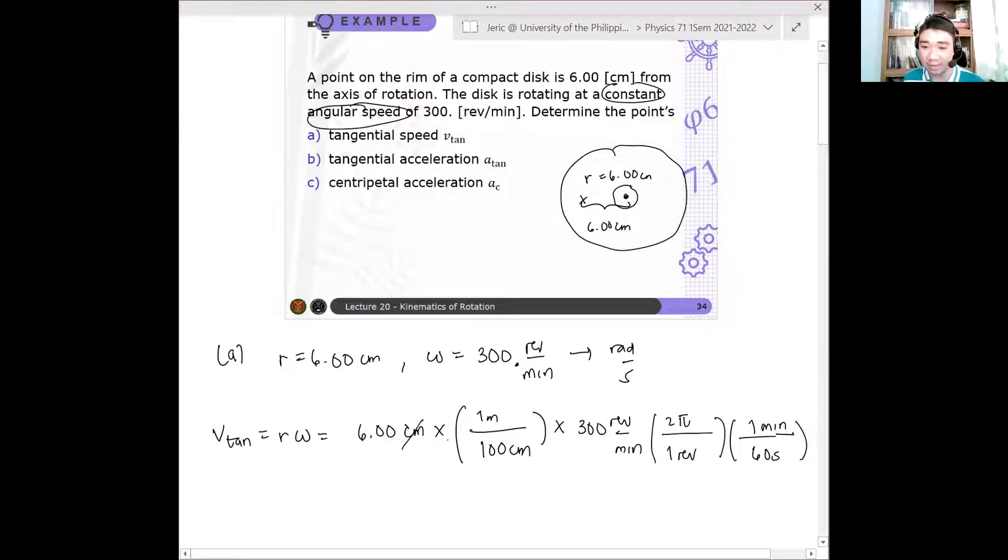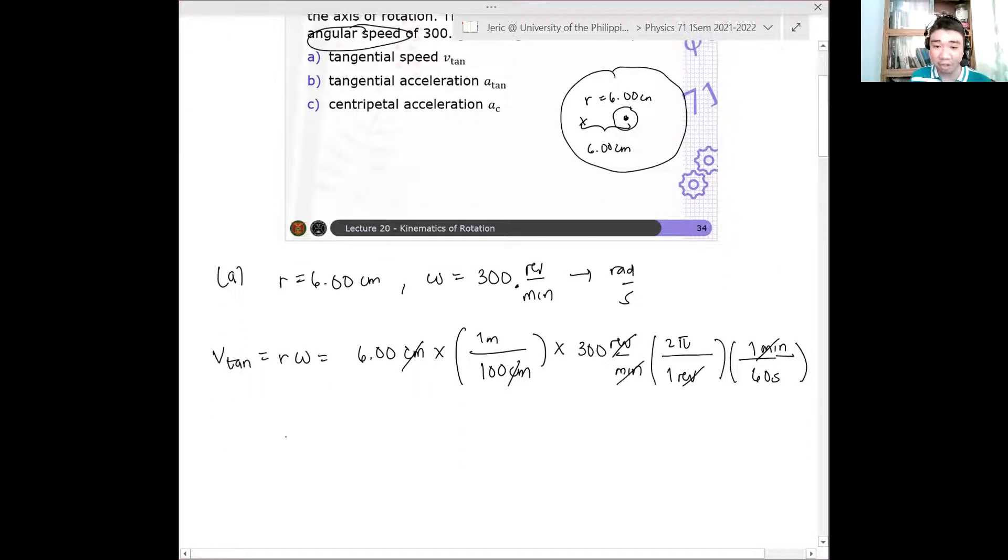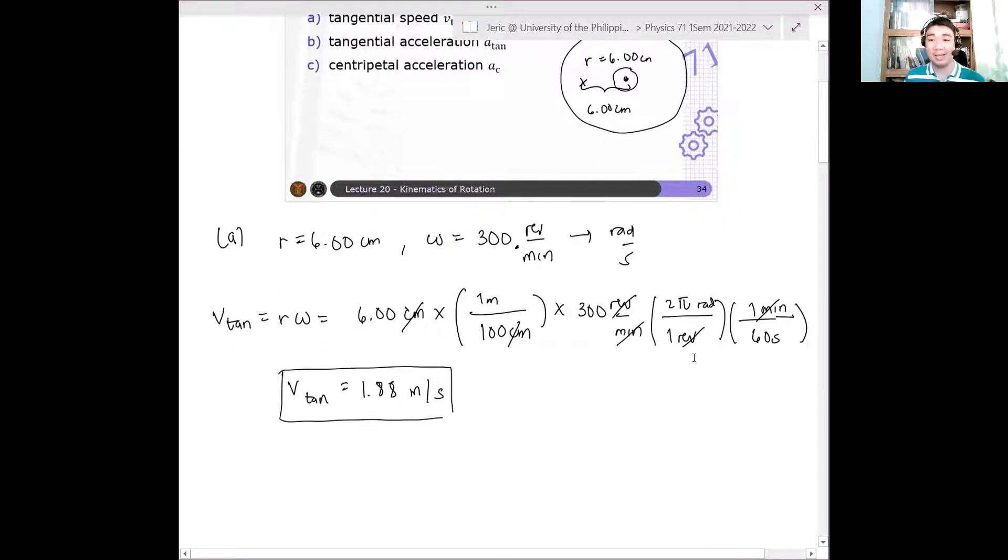So essentially that's it. So cm cancels. Meters remain. Revolutions cancel. Minutes remain, then also cancel. And when you substitute it into your calculator, the tangential velocity is simply equal to 1.88 meters per second. So that is your final answer. Okay? So this is two pi rad, but that rad here can be removed. When you multiply meter by rad, only meter remains. Okay? Questions? Got it? Basically plug and play. Okay.